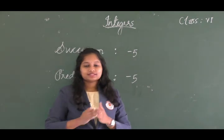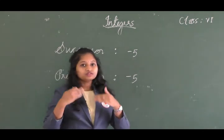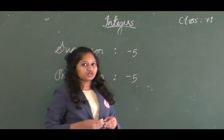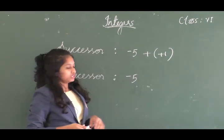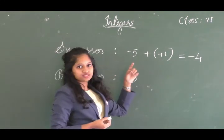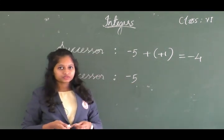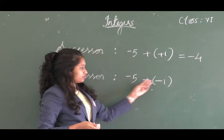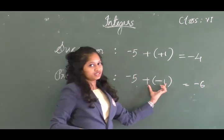Our last topic is successor and predecessor. The successor of a number is the number after it — add plus 1 to find it. For example, the successor of minus 5 is minus 5 plus 1, which equals minus 4. The predecessor of a number is found by adding minus 1 to it. So the predecessor of minus 5 is minus 5 minus 1, which equals minus 6.